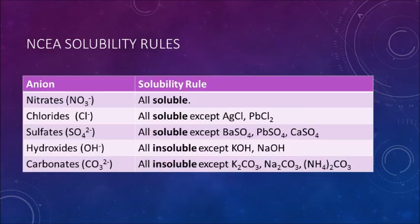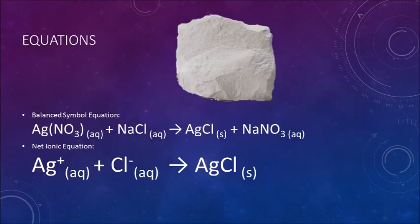To determine whether silver chloride or sodium nitrate is the precipitate, refer to the solubility rules. Sodium nitrate is soluble, so sodium and nitrate ions would be found on their own in the solution as spectator ions. Silver chloride is insoluble, and so must be the precipitate observed. The balanced symbol equation shows that one mole of silver nitrate reacted with one mole of sodium chloride to yield one mole of silver chloride and one mole of sodium nitrate.